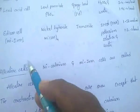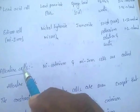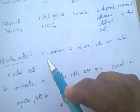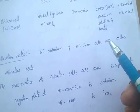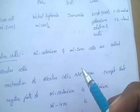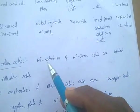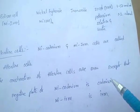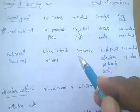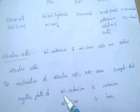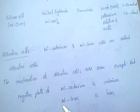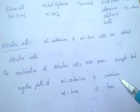Alkaline cells are mainly two types: nickel iron and nickel cadmium. The construction of nickel cadmium and nickel iron cells is the same, except that in nickel cadmium cells the negative plate is cadmium, while in nickel iron (Edison) cells the negative electrode is iron oxide.